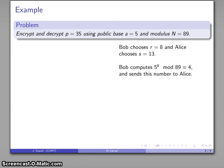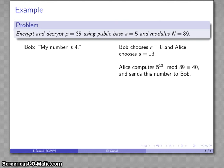And so, Bob computes public base to his number, mod 89. And that's going to be 4, and he's going to send this number to Alice. So he says, my number is 4. Alice, then, computes public base to her number, mod 89, and sends this information to Bob.